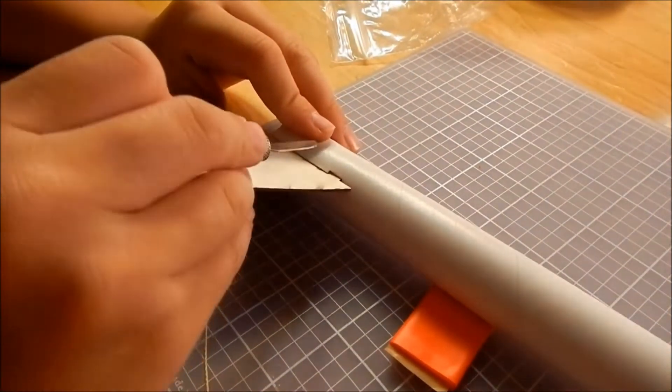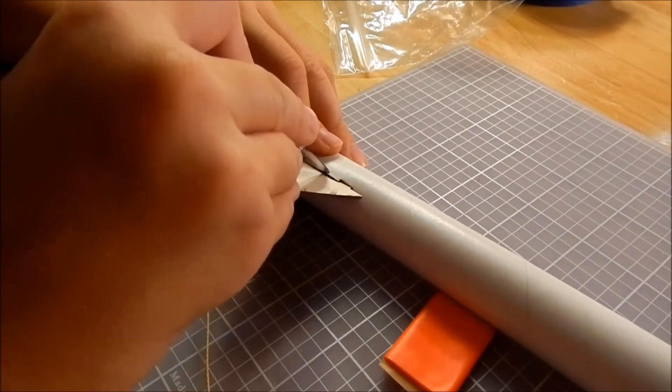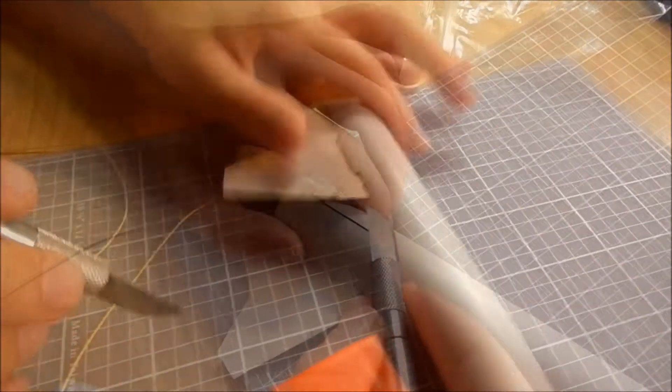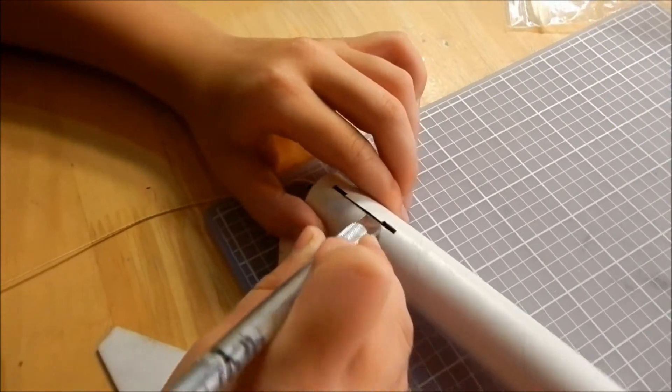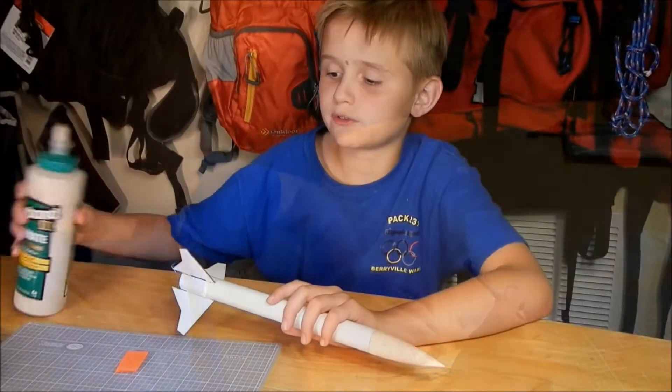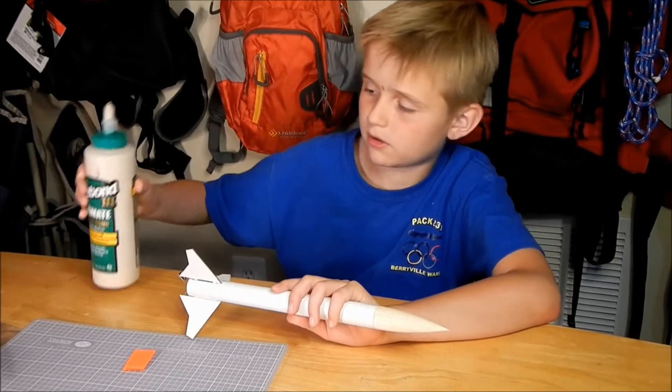So guys, what you want to do is grab your exacto knife and you kind of want to bump this up, and then you want to put your fin in it. You want to do the same thing to all the fins. Once your fins are on, then you want to run a glue line on them.